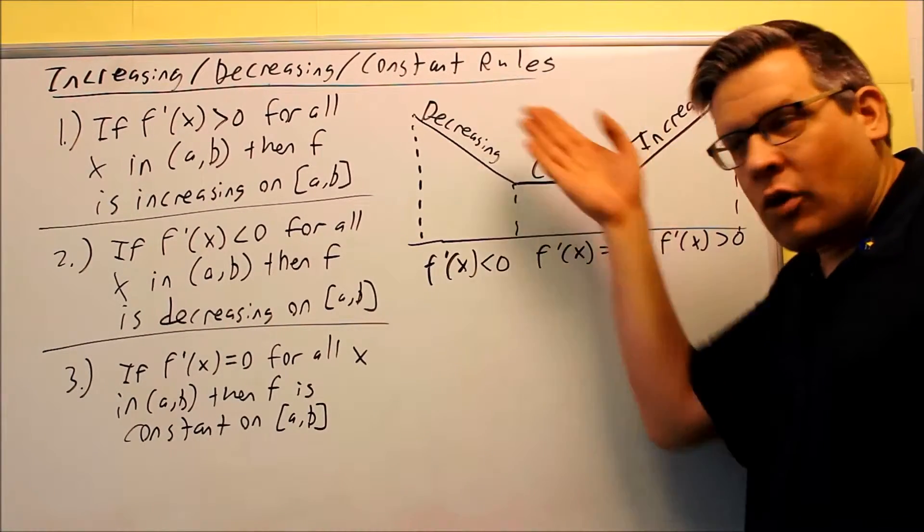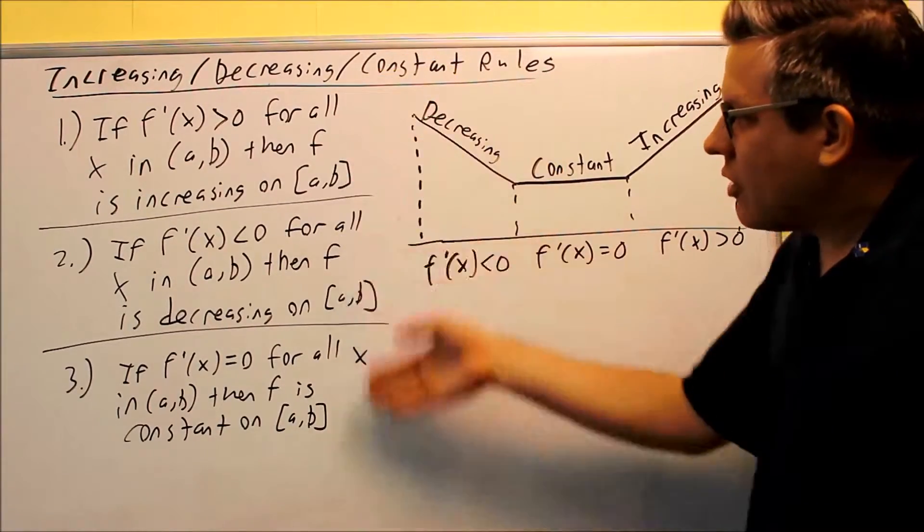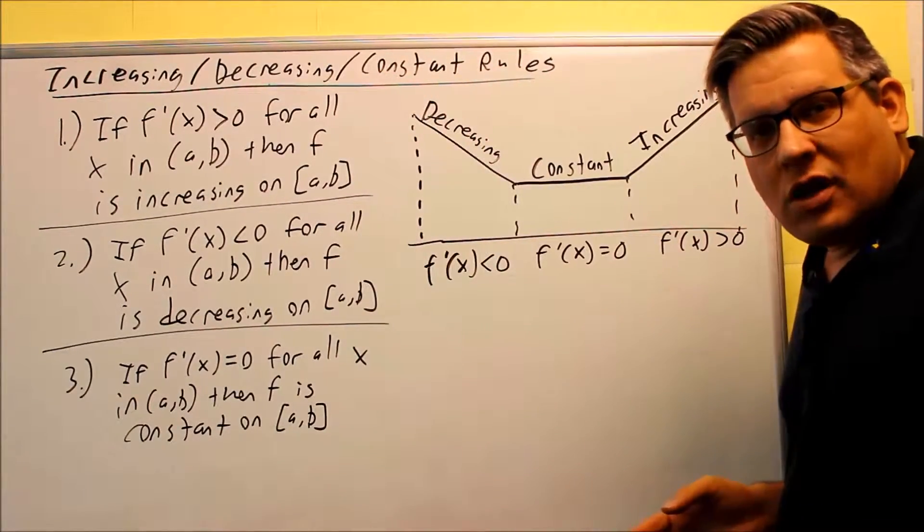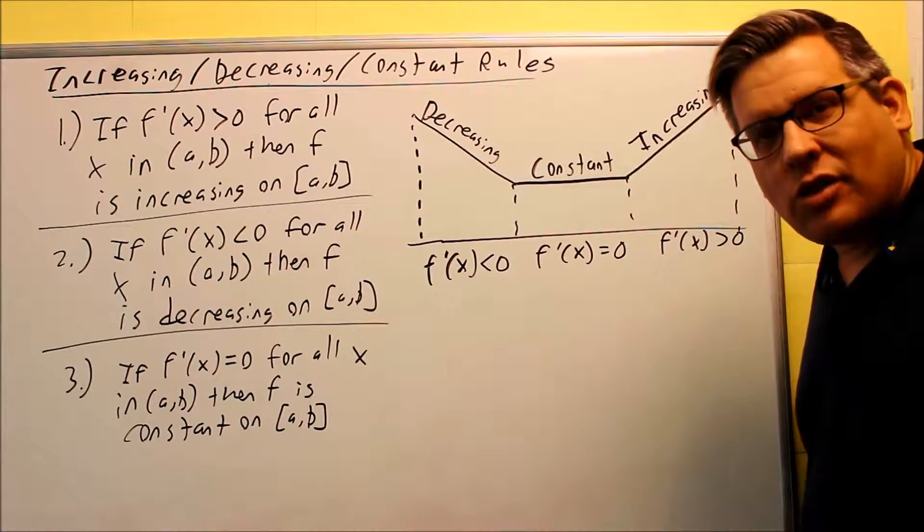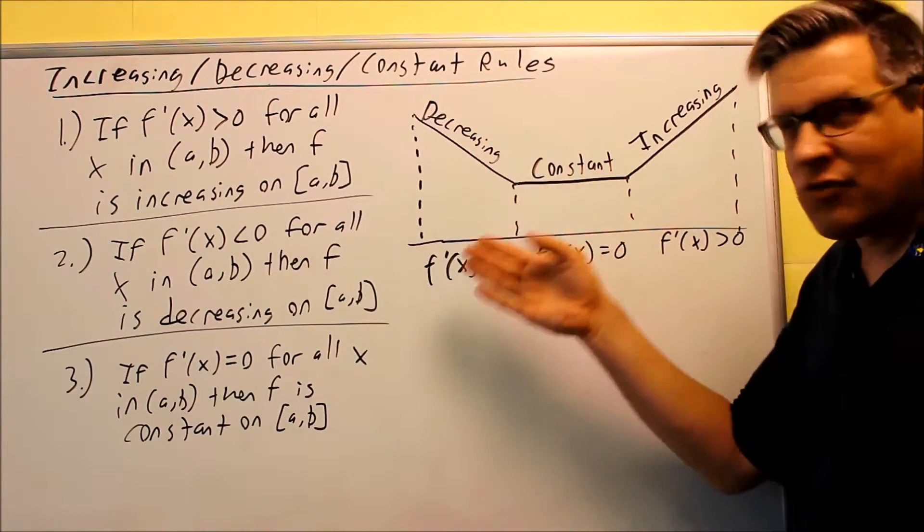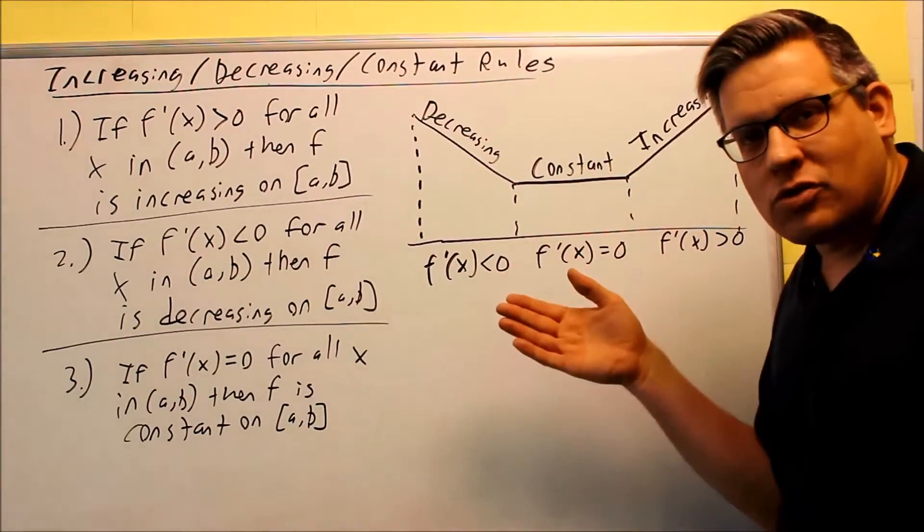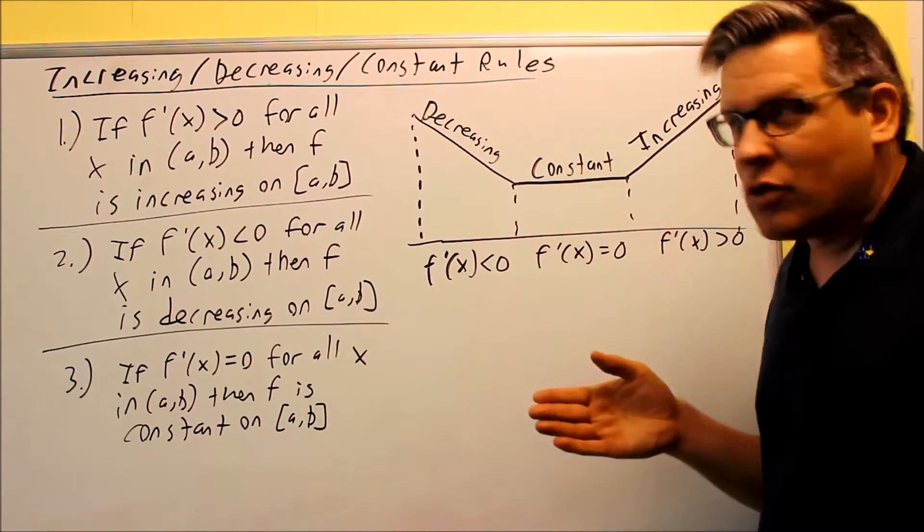So this is the connection between the graph and what we can do algebraically. Here it is formally. We're going to assume that f has to be continuous on the interval and differentiable. We have to have that condition in place first before any of these three are going to apply. It's really important to note that f has to be continuous and differentiable.